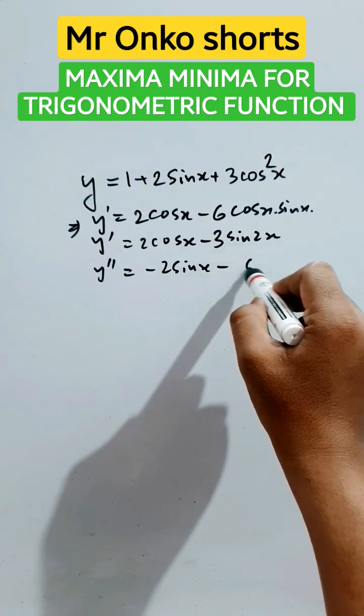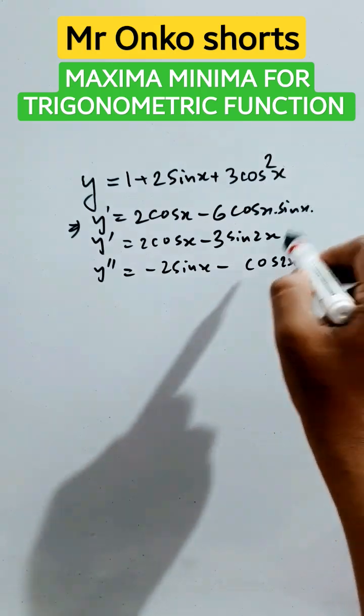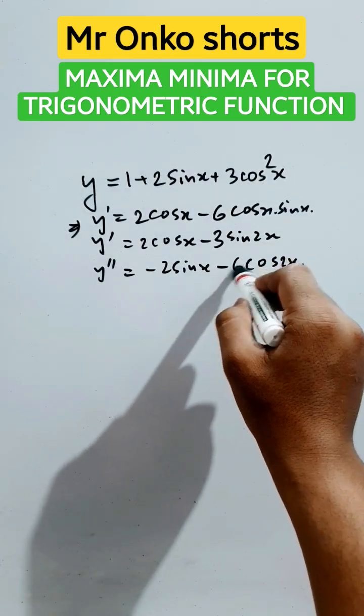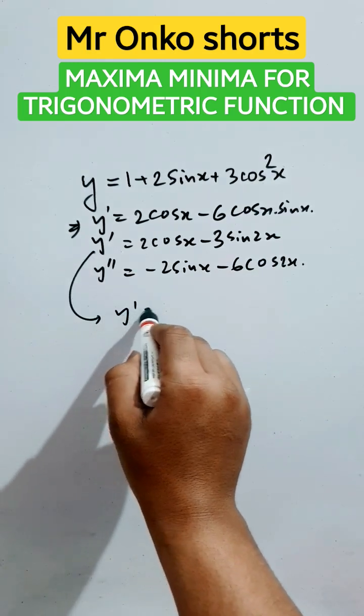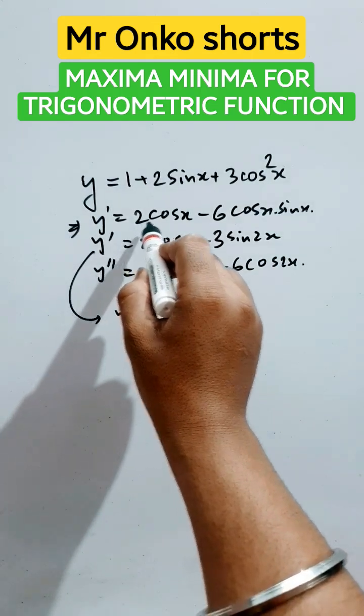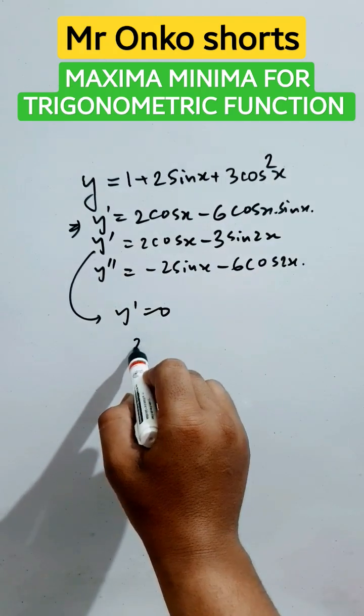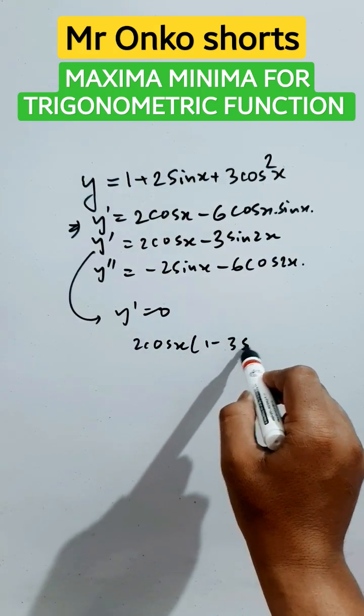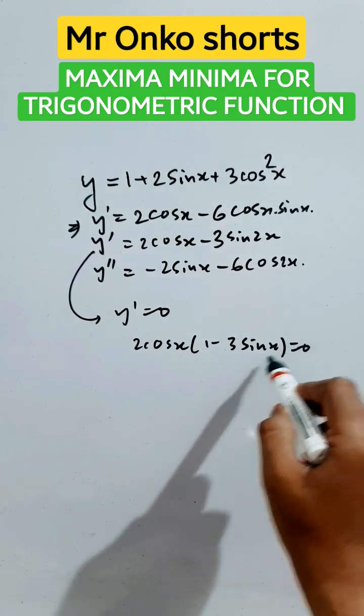So the first derivative will be 0. If we take cos x common, 2cos x common, so it will be 1 - 3sin x = 0.